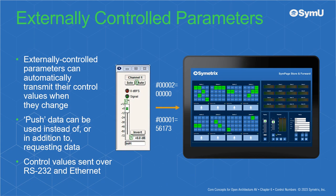All externally controlled parameters can be configured to automatically transmit their control values whenever they change. This push of data can be used instead of, or in addition to, requesting data. Control values are sent out over RS-232 and Ethernet.